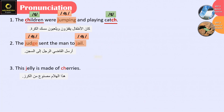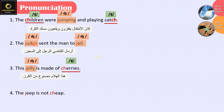Sentence 3: This jelly is made of cherries. Jelly — J; cherries — Ch. Sentence 4: The jeep is not cheap. Jeep — J; cheap — Ch.